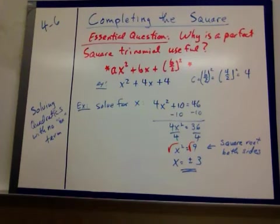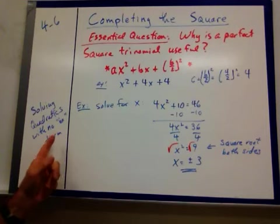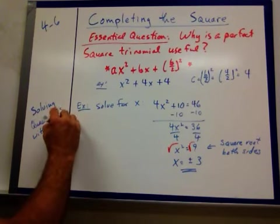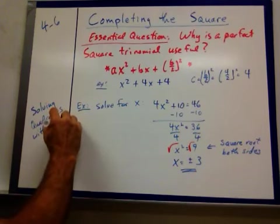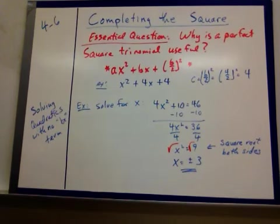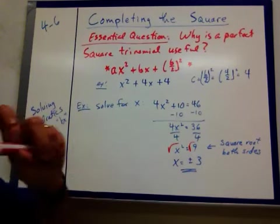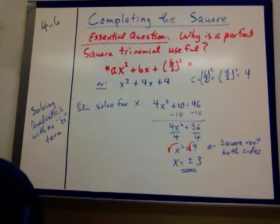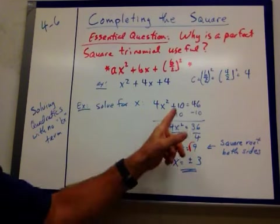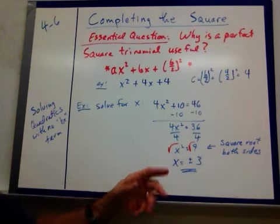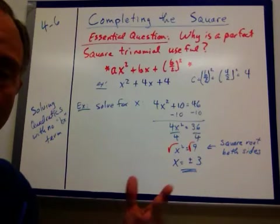So, let's look at solving some more quadratics. This time when there's no bx term here. No bx term. There's no middle term. And you can see here, solve for x. We've got 4x squared plus 10 equals 46. When you see a problem like this and there's no x, there's no bx term here, just the x squared. Then solve it like we saw way back with the linears. Isolate the x squared.